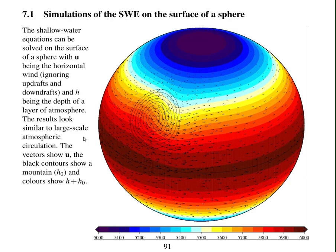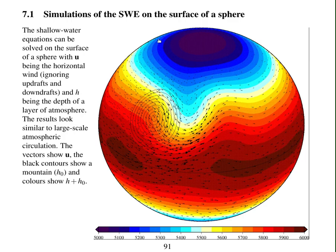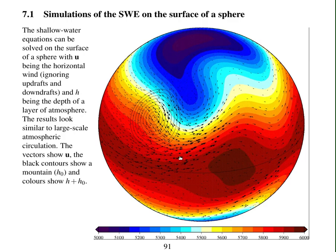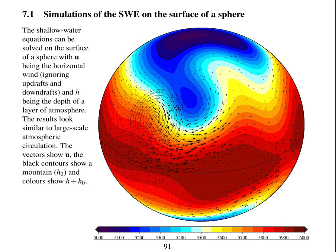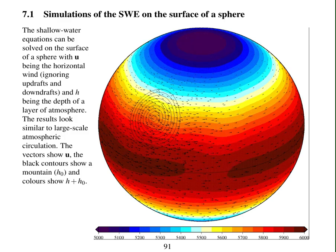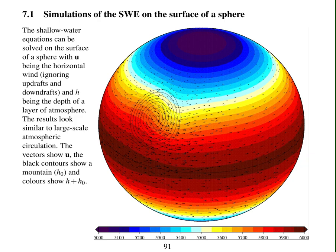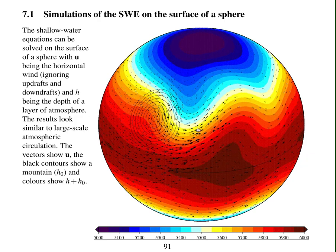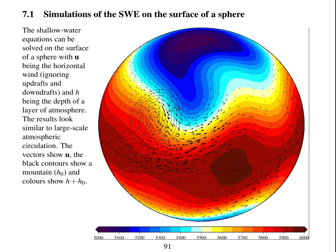You start off with high height at the equator, low height at the pole, and all the wind in geostrophic balance. And then the flow adjusts. There are gravity waves and Rossby waves, which respond to this mountain. And it adjusts into this pattern, this response to the mountain.